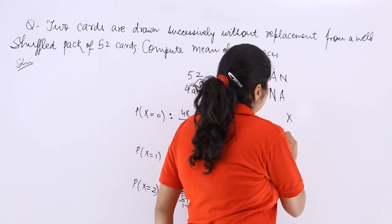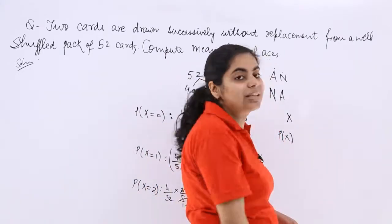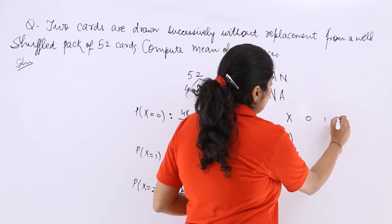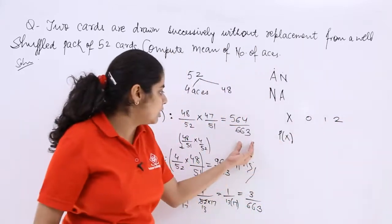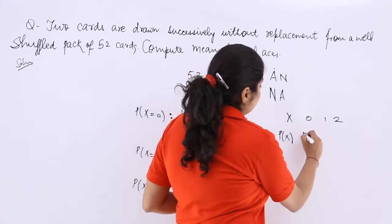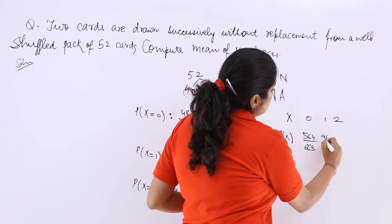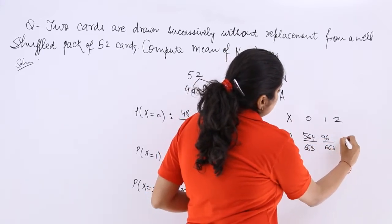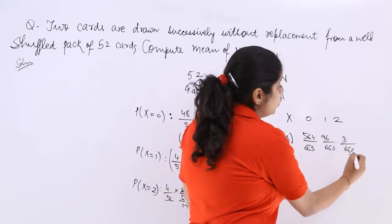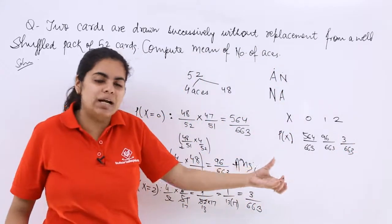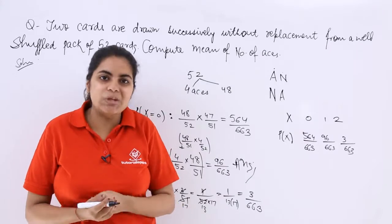Before that let's have the probability distribution table to make things more clear. So this is 0, 1, 2 and what will be the answer? 564 over 663, 96 over 663, 3 over 663. You could have cancelled but when the LCM remains same calculation becomes easier.